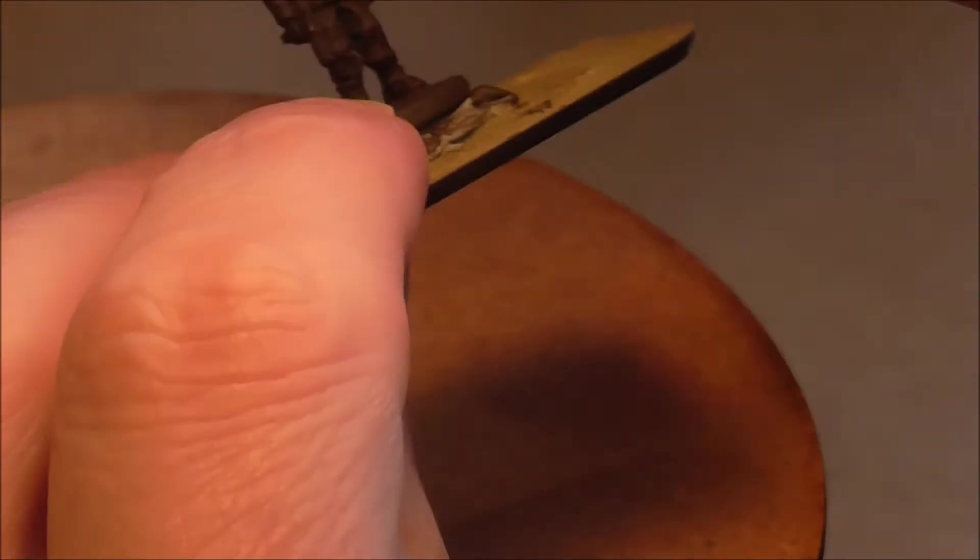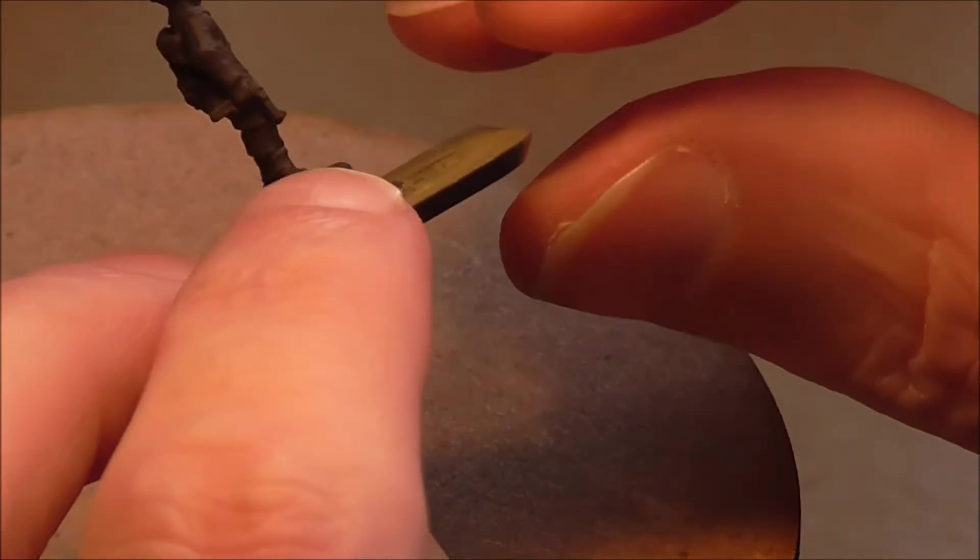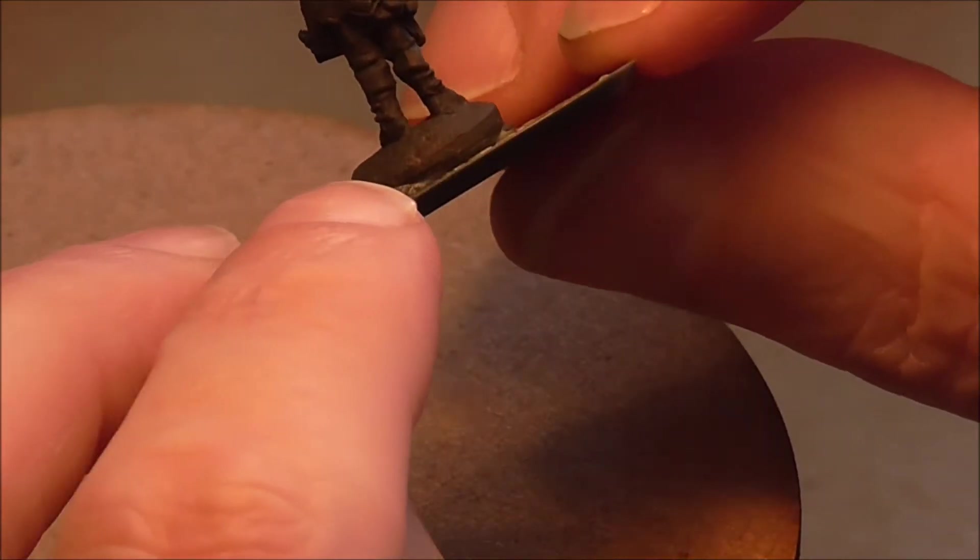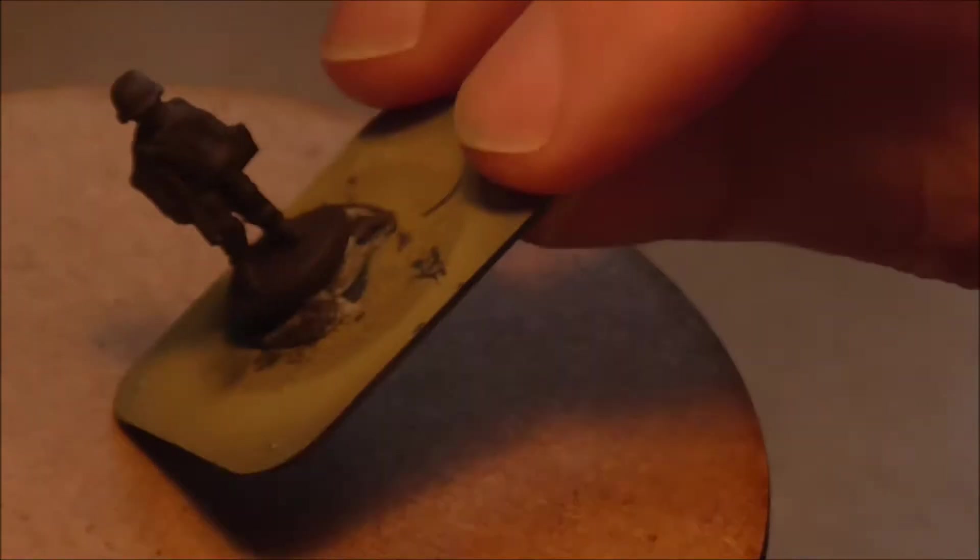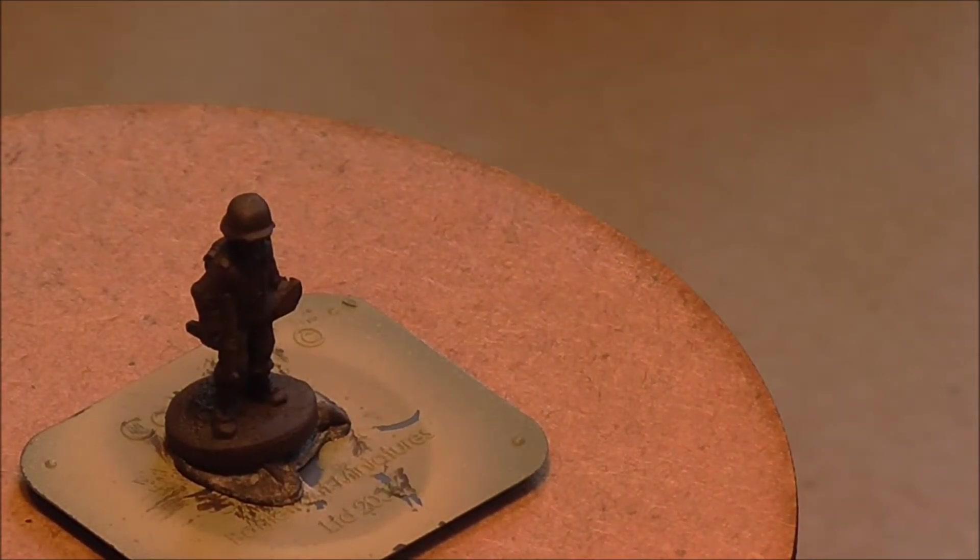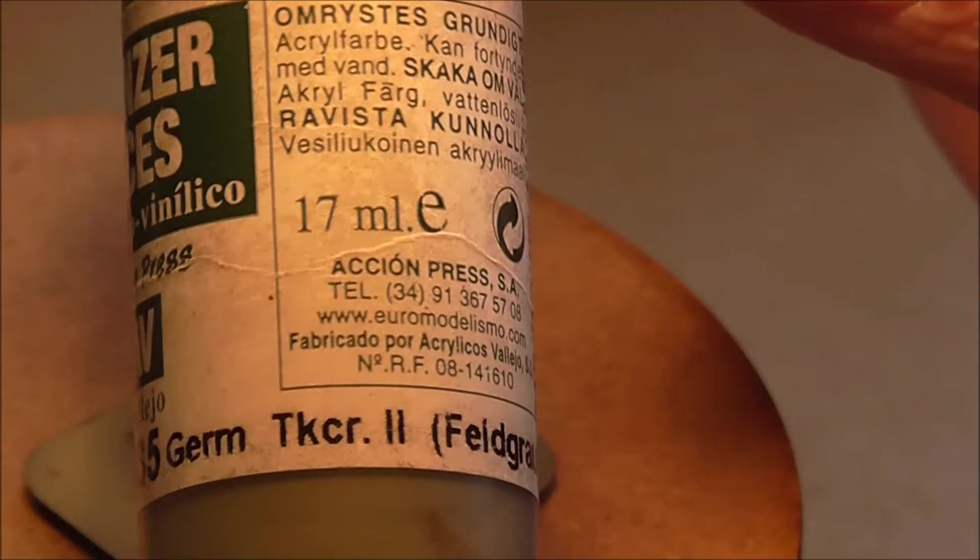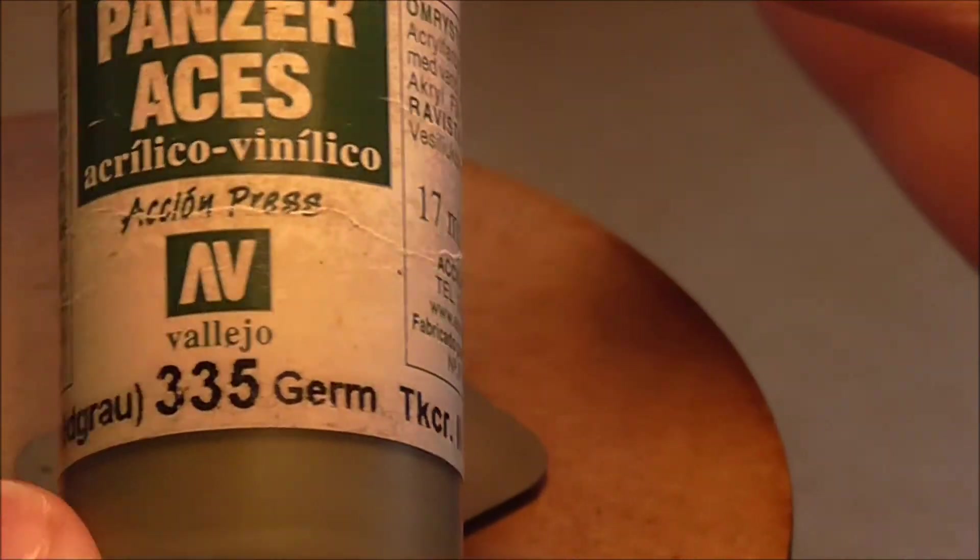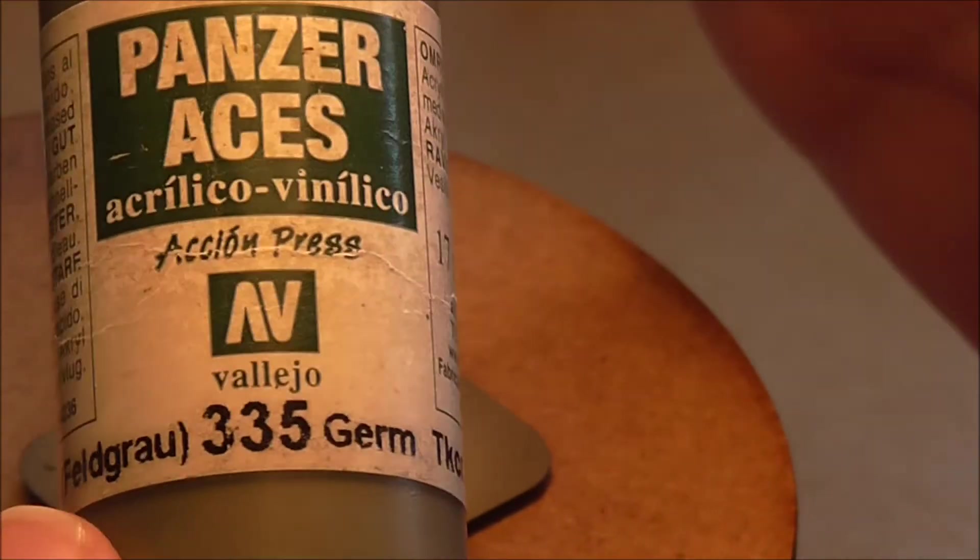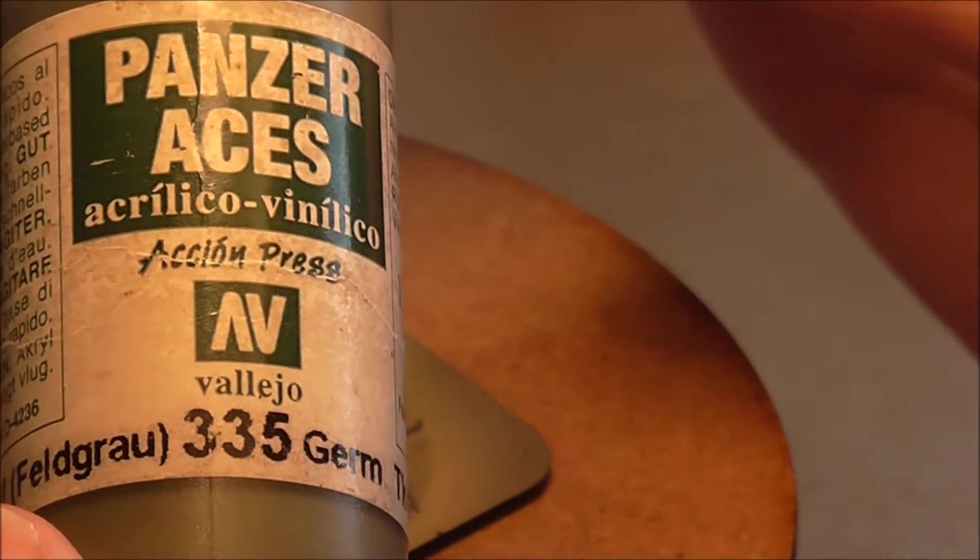In this episode we're going to paint a German Grenadier. In this case it's an NCO. There's a number of colors that I use and that anybody could possibly use. This example I'm going to paint with Panzer Aces German Tank Crew 2 Feel Grey, that's number 335.